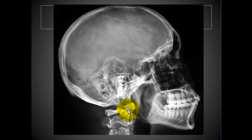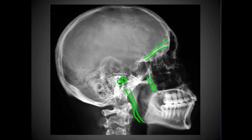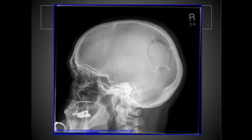Any vertical structure you can tell is not superimposed, and that's an indication of rotation. Looking at EAMs, posterior walls of maxillaries, and the mandibular rami confirms this.